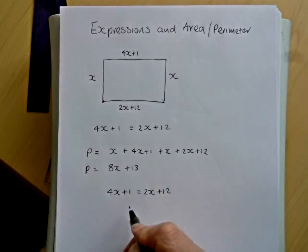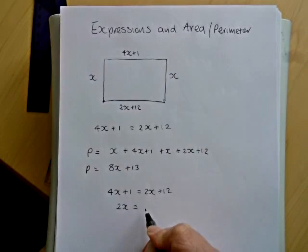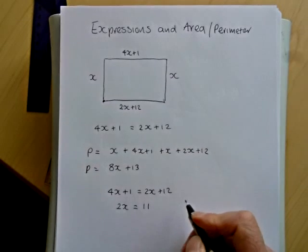So if I take 2x away from both sides, and again if you've watched the video on equations you should understand what I'm doing. If I take the 1 away from both sides, then I'll have 2x equals 11.